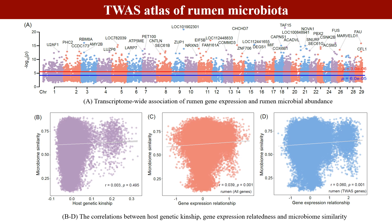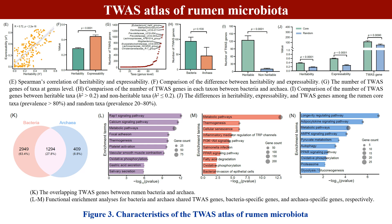Next, we constructed a transcriptome-wide association study atlas of rumen microbiota and detected 28,260 significant gene-microbe associations, including 210 taxa and 4,652 unique genes. Moreover, the TWAS correlation features showed that heritability and expressibility were significantly positively correlated — the heritable rumen microbiota had more associated genes. Compared with random microbiota, rumen-core microbiota had higher heritability, expressibility, and more TWAS genes.